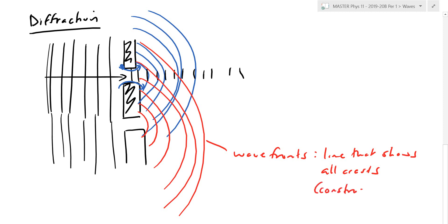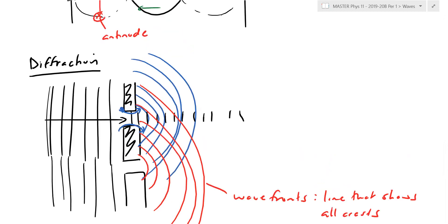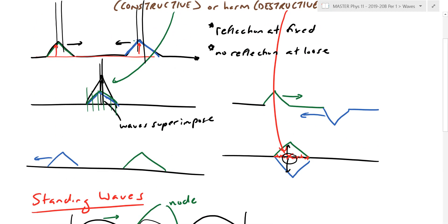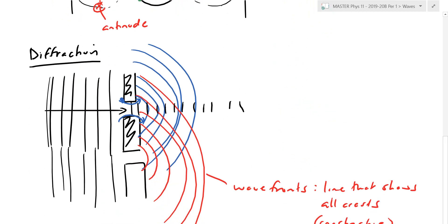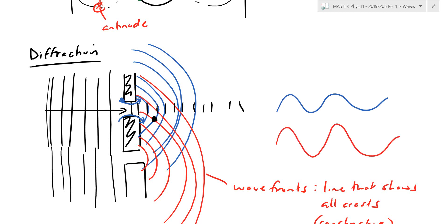All the crests represent constructive interference. In the 2D case, where blue is bright and red is bright, we get a superimposed line twice as bright. Where red is dark and blue is dark, we get no light — demonstrating destructive interference. This also demonstrates diffraction, which is the wrapping around of waves at a corner.